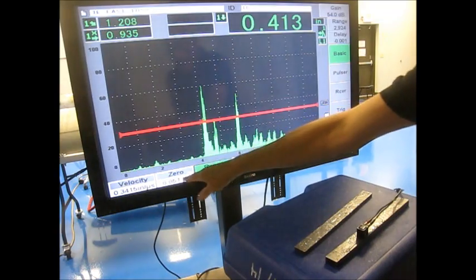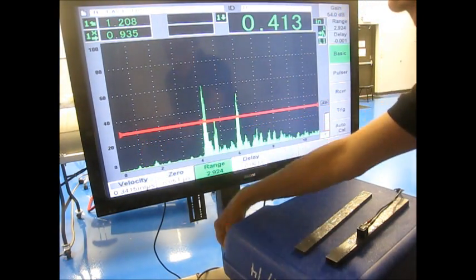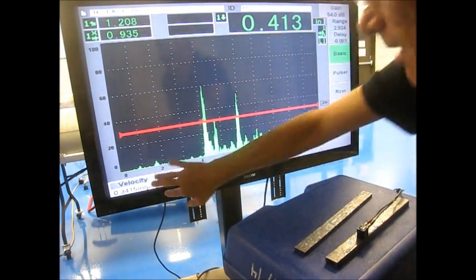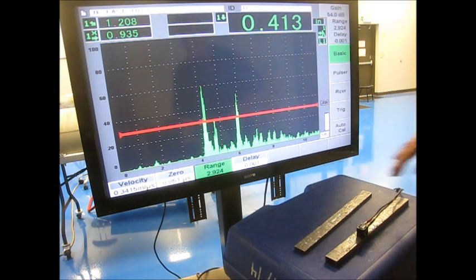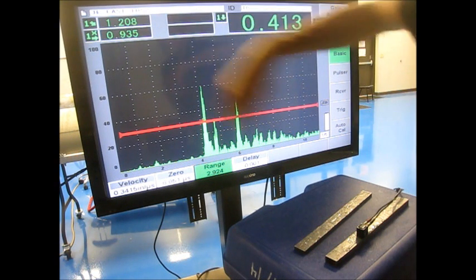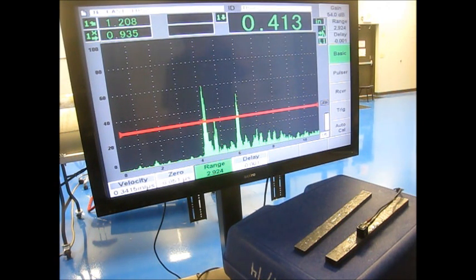So something that's 100 thousandths deep will be at the one line, 200 is at 2. But the velocity is way out, because I really had to stretch it out. So, you're not going to be able to use your surface distance minus x value function to do any surface distance measurement.